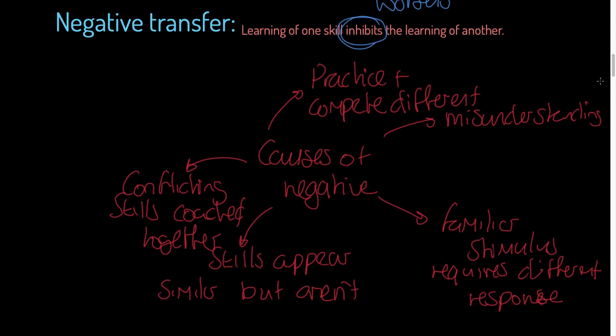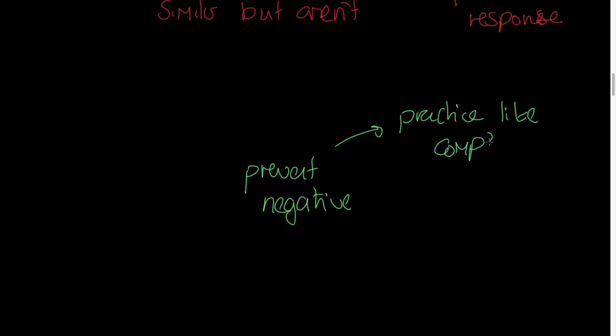This is what we want to look at: how do we prevent negative transfer? The coach and athlete want to prevent negative, which of course is going to promote positive. How do we do that? No surprise: practice like the competition. We already know that this is near transfer. We also want to draw attention to differences. Just tell the performer how these two skills are different. Let me go back to my tennis example: the smash and the serve. The smash, the ball could be coming from in front or slightly behind you, whereas the serve, the ball's going to be directly above you or just in front consistently.